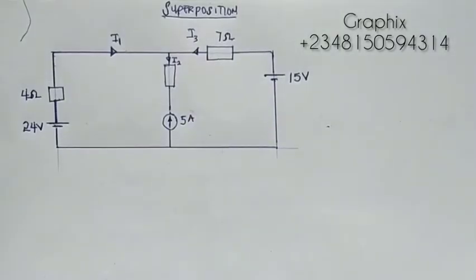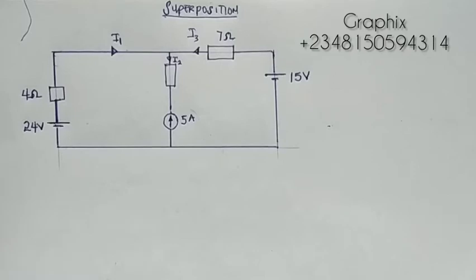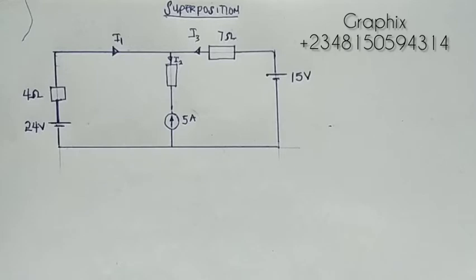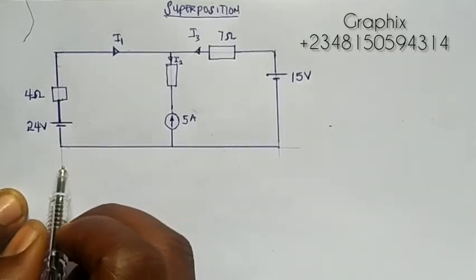Hello everyone, my name is Graphics. Today we'll be solving this circuits problem using superposition. One of the rules of superposition is that we want to know the effect of each source in the circuit, so we have to short circuit all the voltage sources or open circuit all the current sources — leaving only one source active at a time.